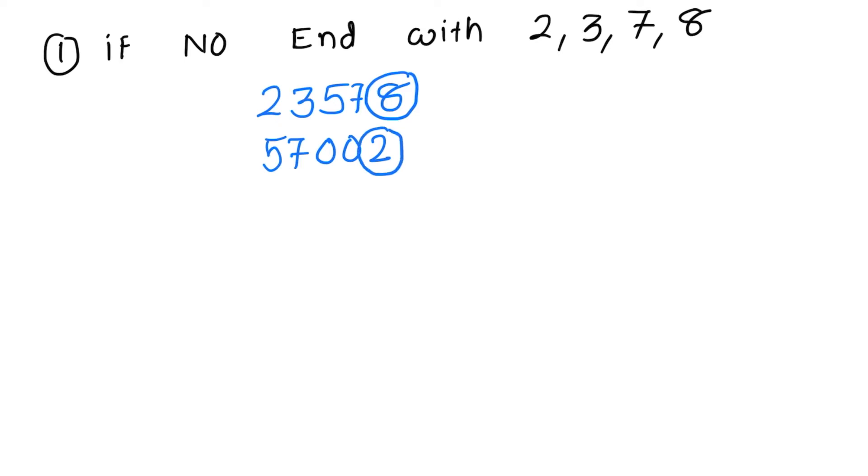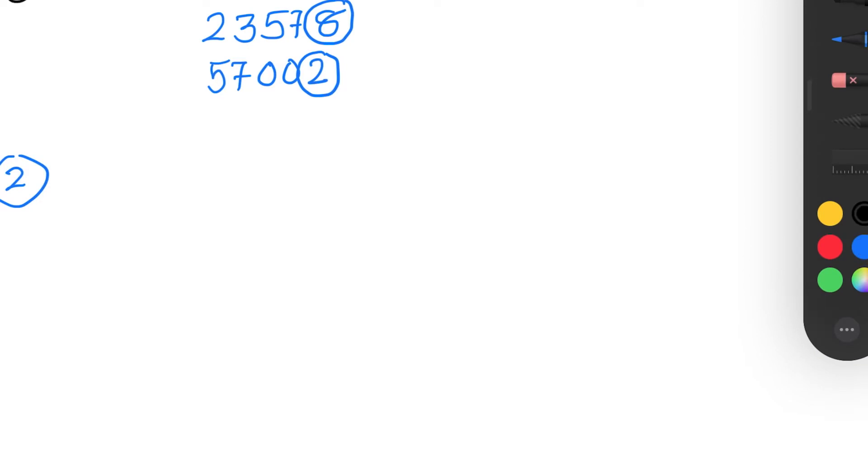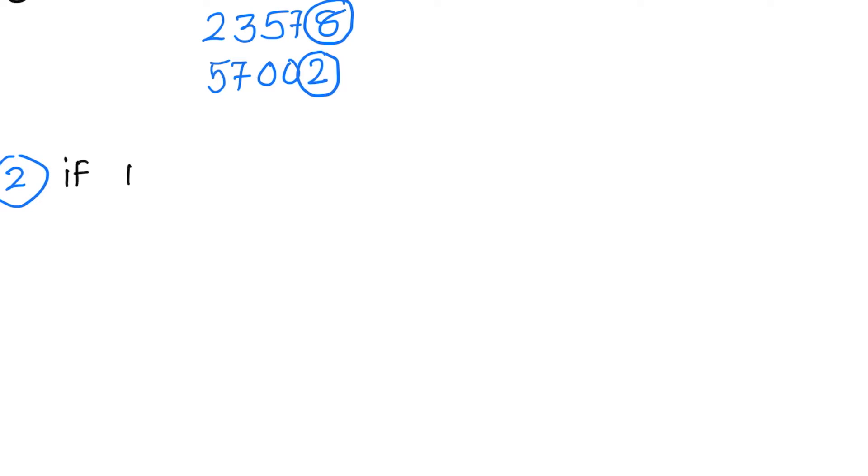Second rule: what's the second rule? If number end with odd number of zeros, then also I can say that it's a non-perfect square number.